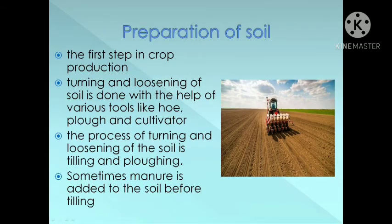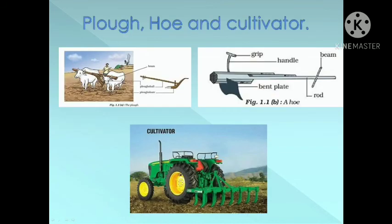Preparation of soil: This is the first step in crop production. In this step, turning and loosening of soil is done with the help of various tools like plow, hoe, and cultivator. The process of turning and loosening of soil is called tilling or plowing. Sometimes manure is added to the soil before tilling, which brings up the nutrients present below the soil so that plants can get the necessary nutrients easily. Here you can see the pictures of plow, hoe, and cultivator.